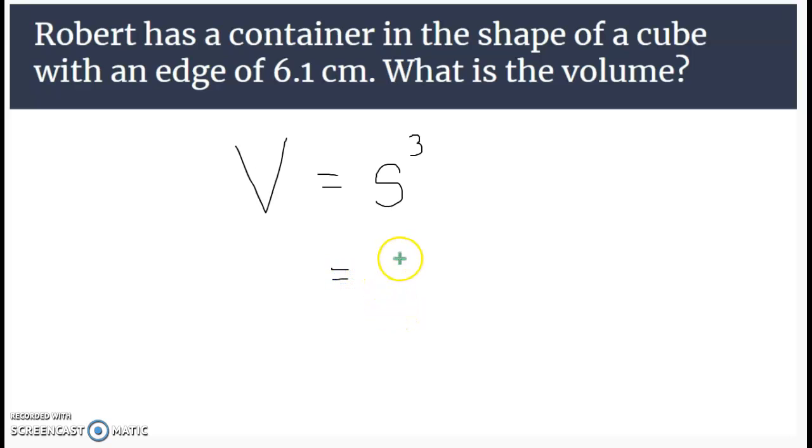All we need to do is plug in that 6.1 and multiply it by itself. 6.1 times 6.1 times 6.1. We get 226.981. And since we're in centimeters, it would be centimeters cubed.